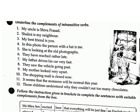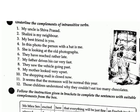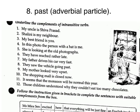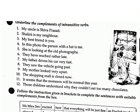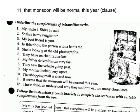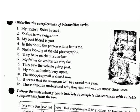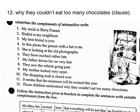6. They have reached rather late. Answer: late — adverb. 7. My father drives his car very fast. Answer: fast — adverb. 8. They saw the vehicle going past. Answer: past — adverbial particle. 9. My mother looked very upset. Answer: upset — adverb. 10. The shopping mall is closed now. Answer: closed — adverb. 11. It seems that the monsoon will be normal this year. Answer: that the monsoon will be normal this year — clause. 12. Those children understood why they couldn't eat too many chocolates. Answer: why they couldn't eat too many chocolates — clause.